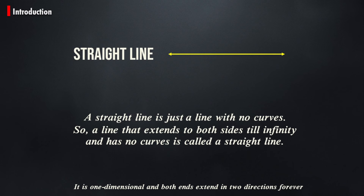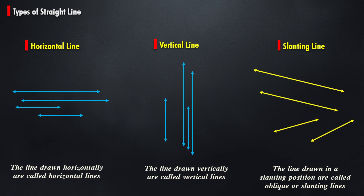In geometry, we all learn about straight lines. A straight line is just a line with no curves. A line that extends to both sides till infinity and has no curves is called a straight line. It is a one-dimensional figure and both ends extend in two directions forever. There are basically three types of straight line.